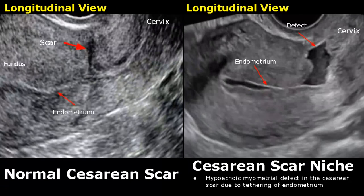This is another image of a normal caesarean scar. It is a hypoechoic line in the myometrium.